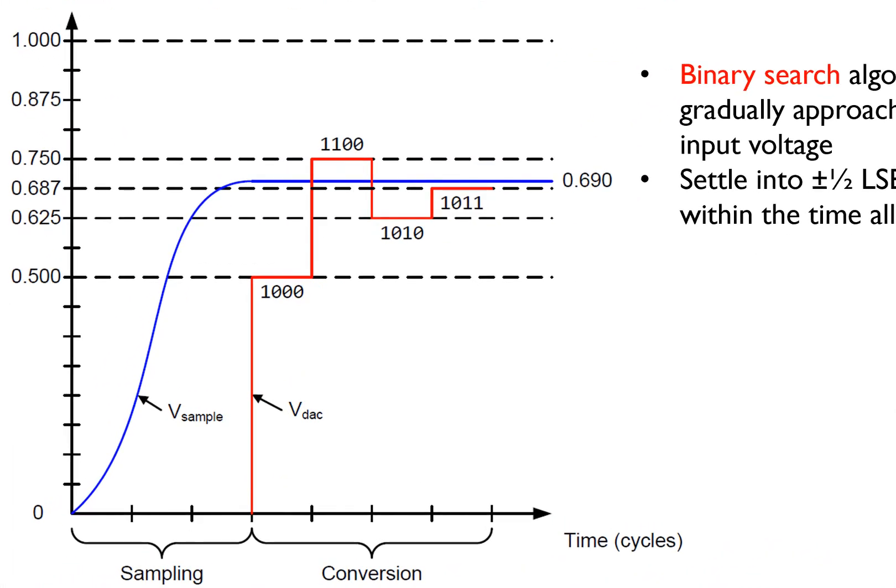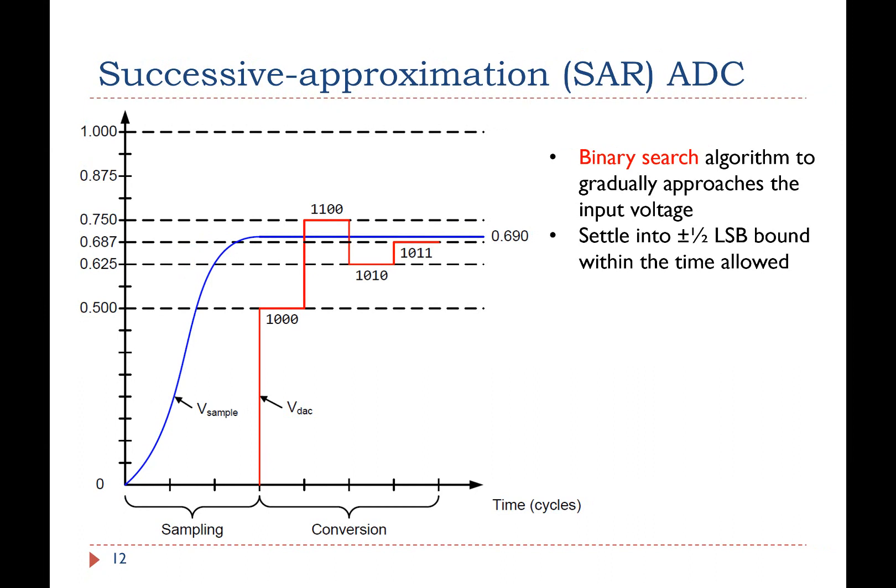In this 4-bit ADC example, the conversion phase takes 4 clock cycles. During the first cycle, the analog input is compared against 1000, which represents 0.5 times the reference voltage. Since the input is greater than 0.5 in this example, during the second clock, the input is compared with 0.75. In the third cycle, the input is compared with 0.625 because it was smaller than 0.75. And in the last cycle, the input is compared with 0.687. For n-bit ADC, the conversion phase takes n cycles. In each cycle, one bit of the output is determined, starting from the most significant bit.